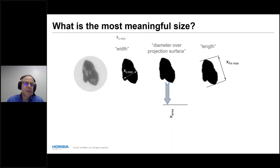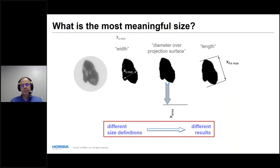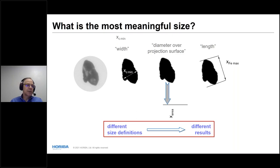If you have a particle, what's the most meaningful particle size? Working from a picture, you could talk about the XC min for microscopists, the projected area expressed as X area, or the longest length, say Feret max. Different size definitions give different results — the Feret max might be four microns and the width two microns. Neither is wrong; they're just looking at different things. When you communicate about size results, make sure you're discussing the same size definition, or you'll be talking past each other.